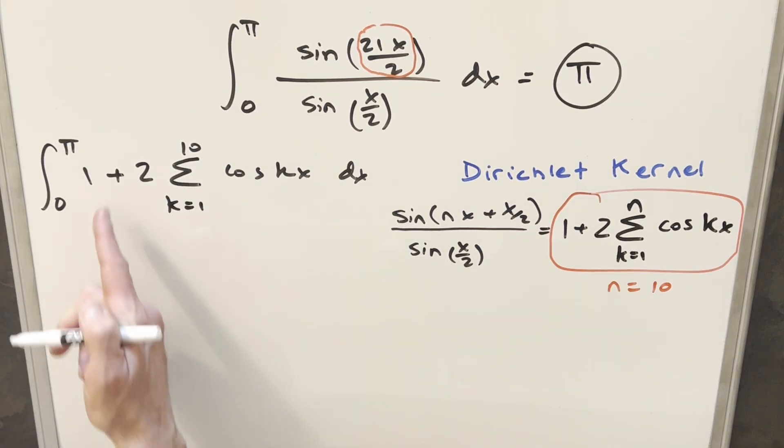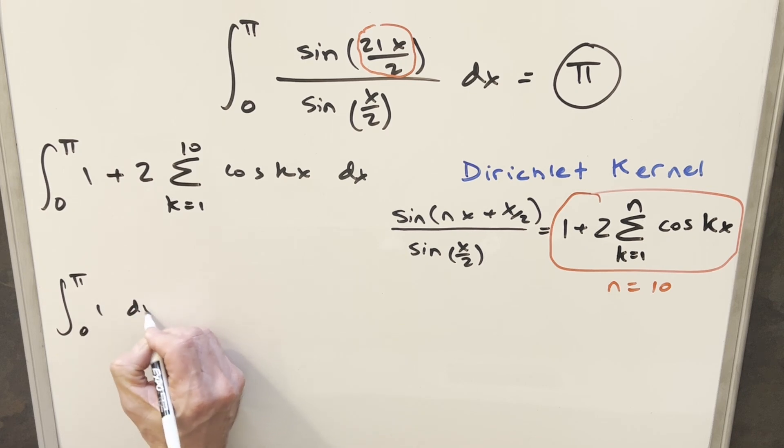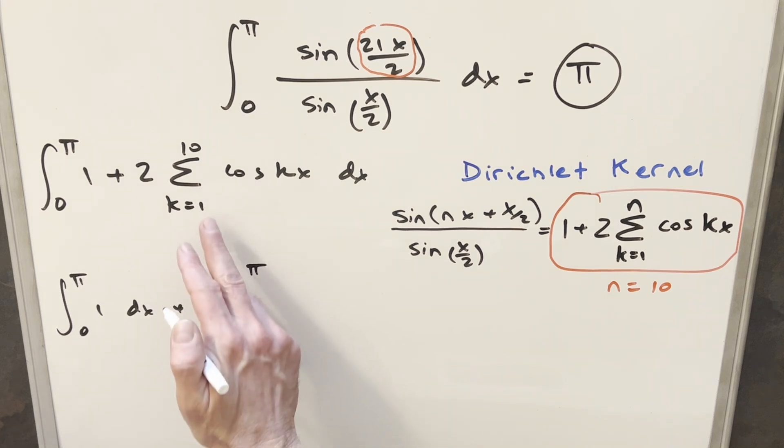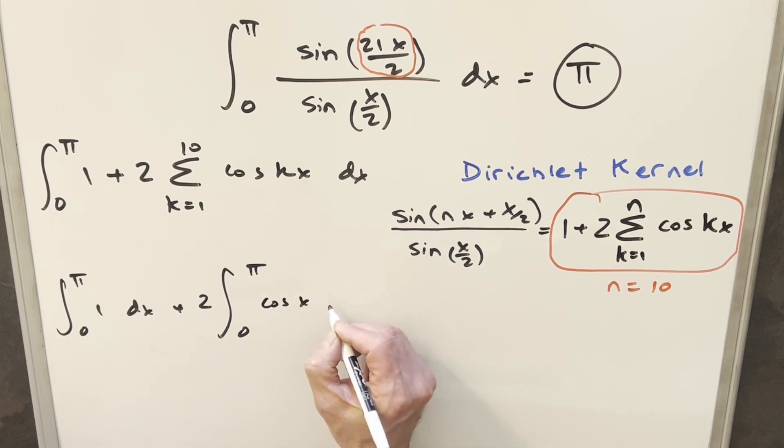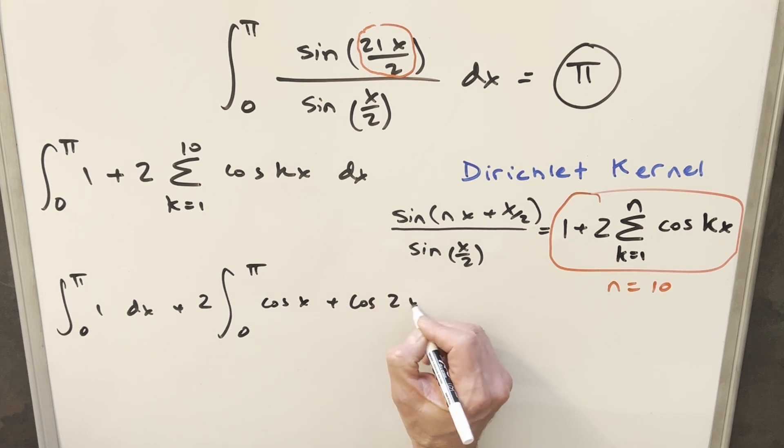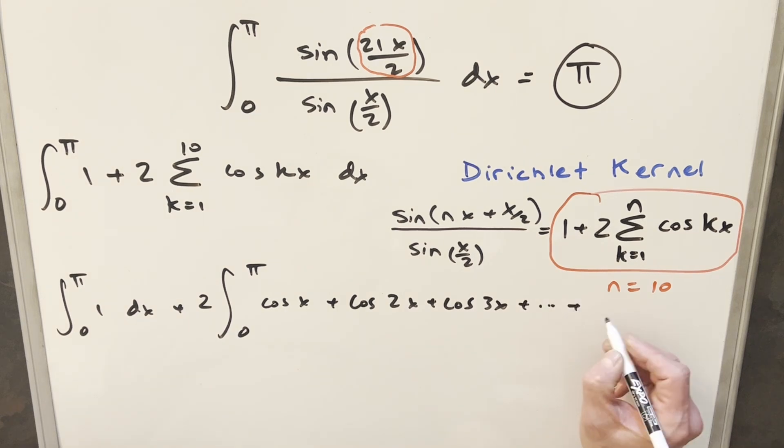But then because we have a sum here, I can break this into two integrals. So the first integral is going to be just 1 dx. The second one, what I can do is take this 2 and bring it up front here, and then we're going to have this sum, but I'm going to actually expand it out. So for our first term, when k is 1, we're going to have just cosine of x. Then when k is 2, we're going to have cosine 2x, cosine 3x. And our last term, when k is 10, this thing's going to go all the way to cosine 10x.